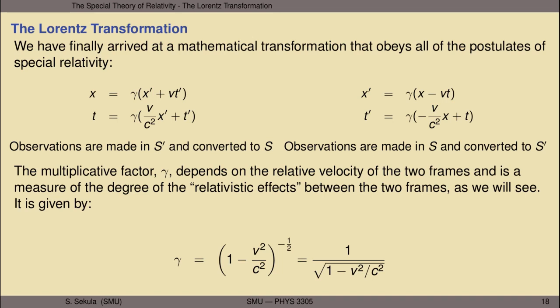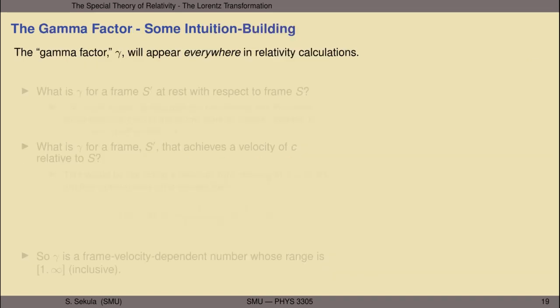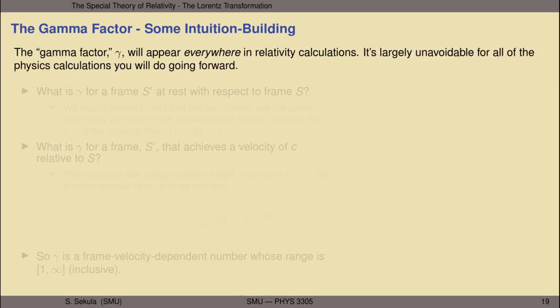This multiplicative factor gamma depends on the relative velocity of the two frames and effectively measures the degree of relativistic effects—how much you need to take special relativity into account. It's given by 1 over the square root of the quantity 1 minus v squared over c squared. Let's build some intuition about the meaning of gamma. It appears everywhere in special relativity. In general relativity it gets absorbed into other things, which we'll only cover in the most shallow way in this course.